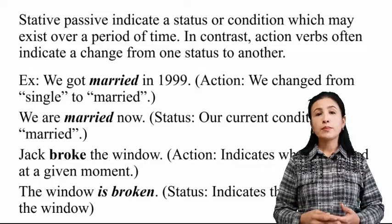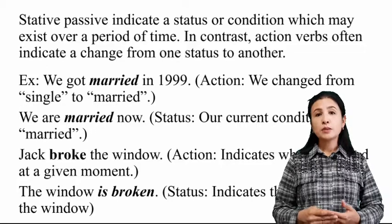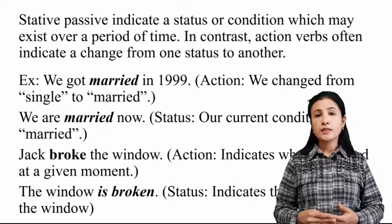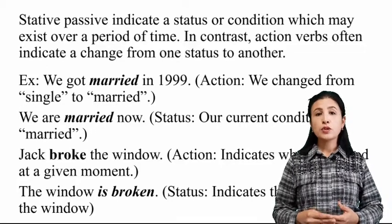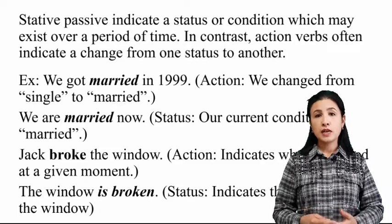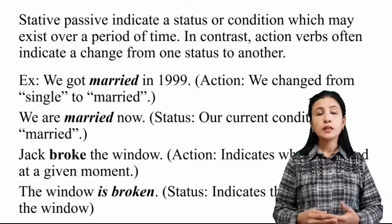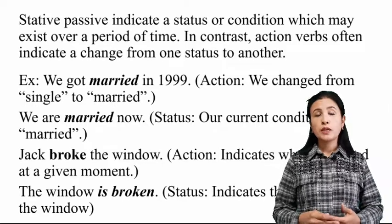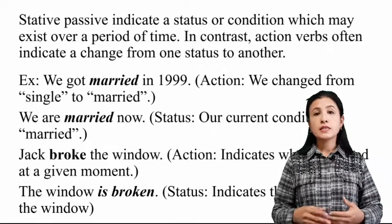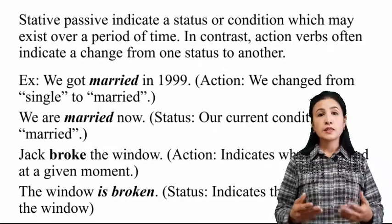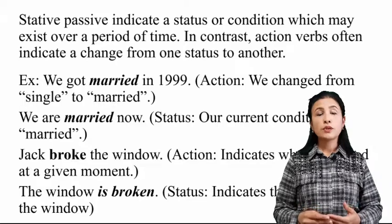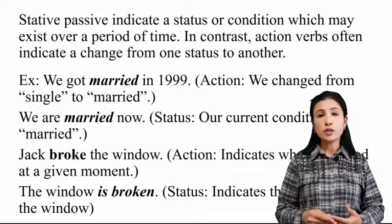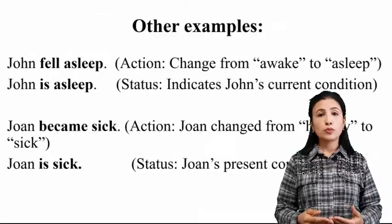'Jack broke the window.' In this sentence, 'broke' is an action because it describes what happened at a particular time. And the last sentence: 'The window is broken.' Here, 'broken' is a status because the current condition of the window is broken.